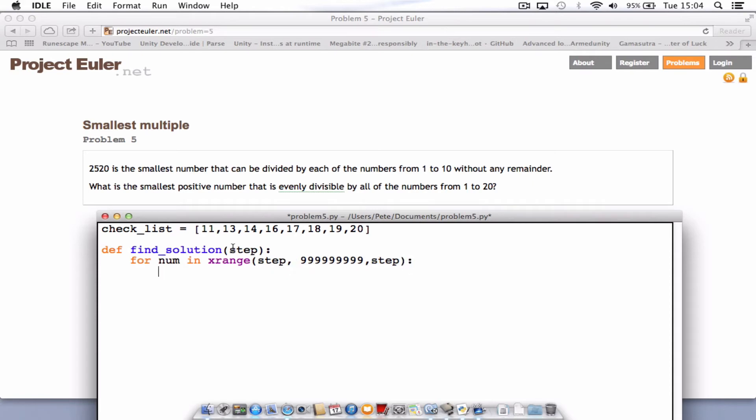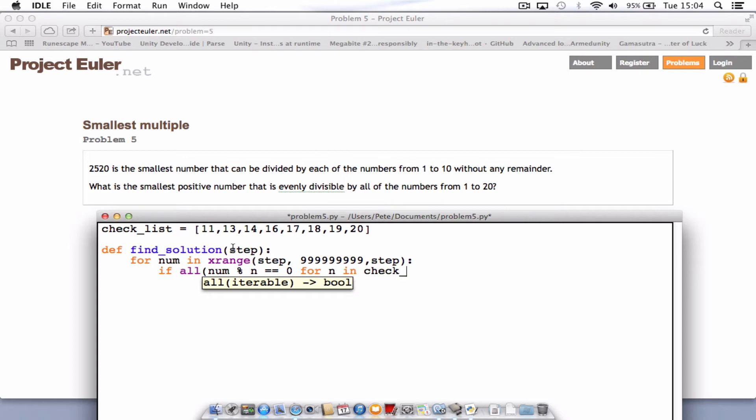We'll do an if test now. So if all num percentage symbol n equal to 0 for n in checklist. Next, close bracket, colon, press enter, return num, if not, return none.